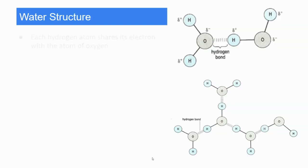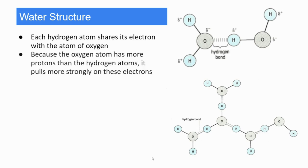So water structure. Each hydrogen atom shares its electron with the atom of oxygen, as you can see in the diagram. Because the oxygen atom has more protons than the hydrogen atoms, it pulls more strongly on these electrons.